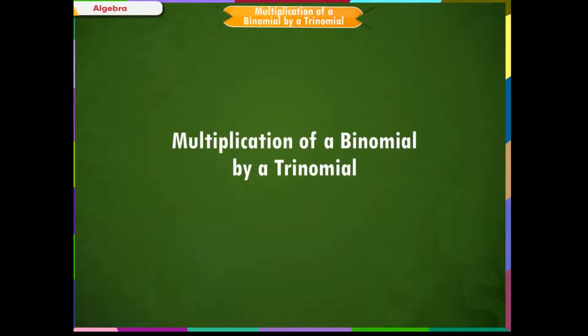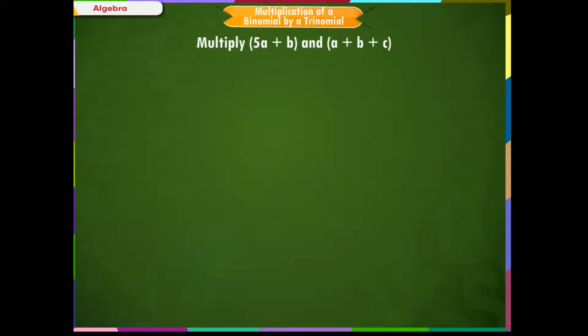Multiplication of a binomial by a trinomial. Multiply 5a plus b and a plus b plus c. Solution: as per the given question, the binomial is 5a plus b and the trinomial is a plus b plus c.